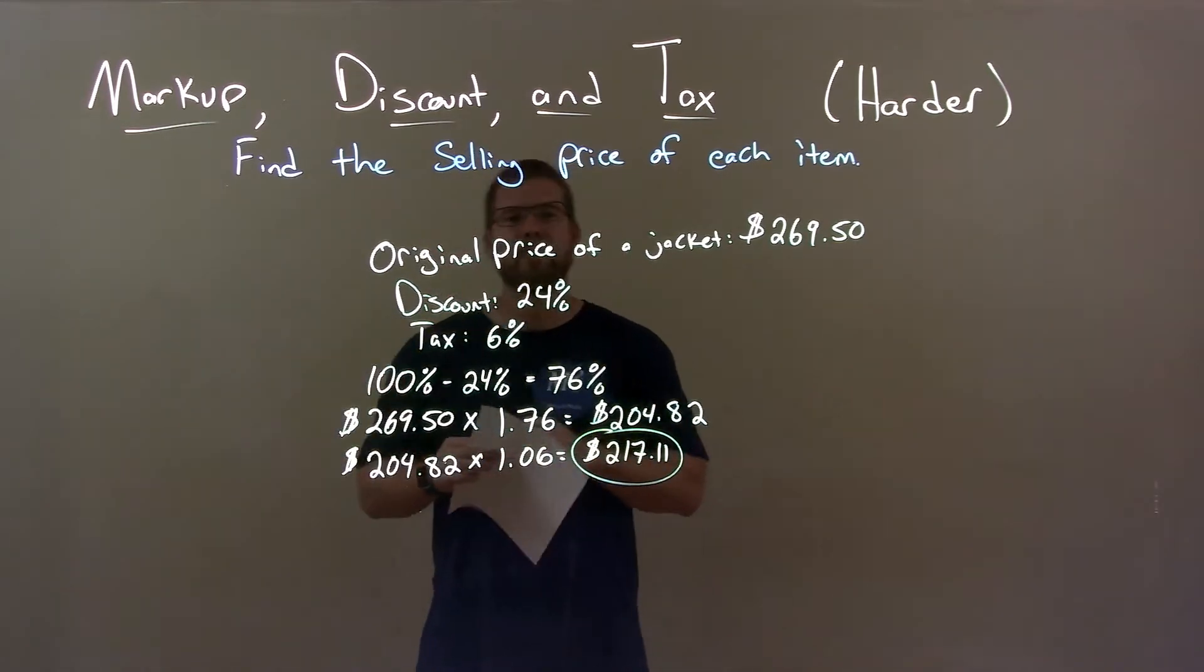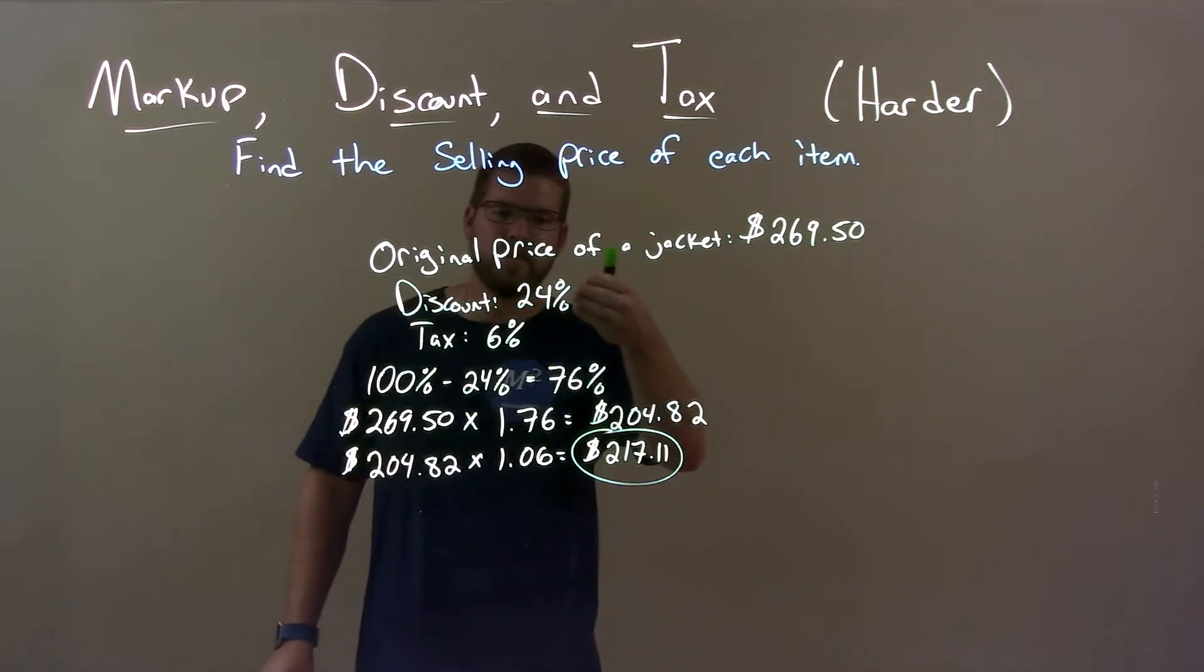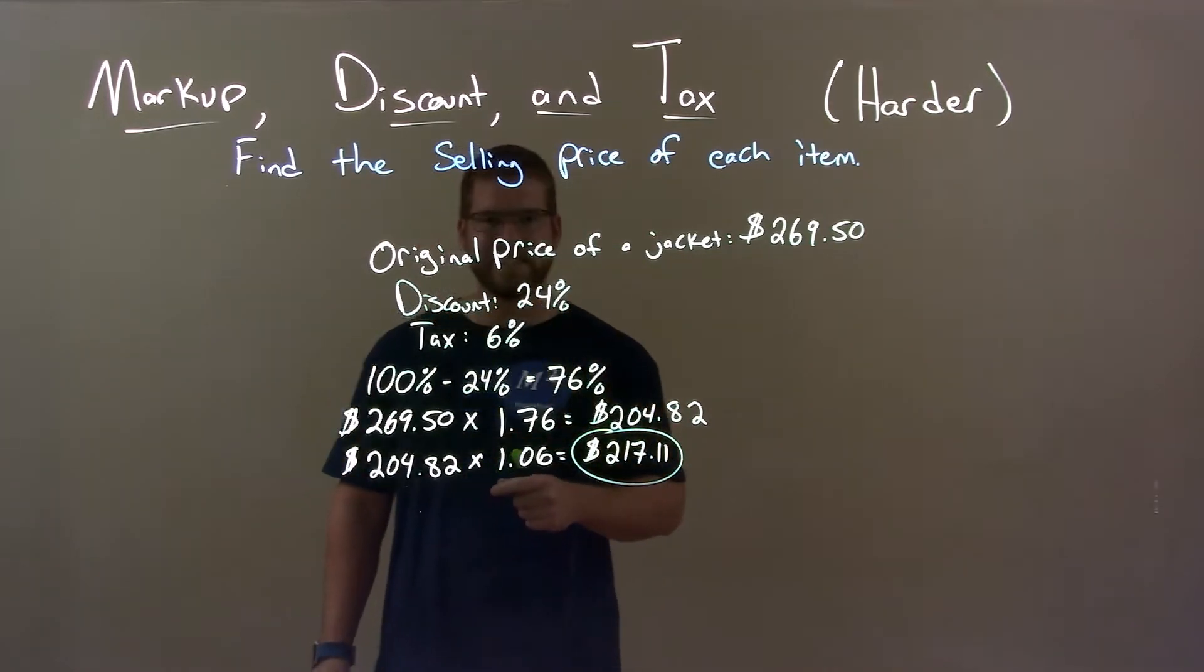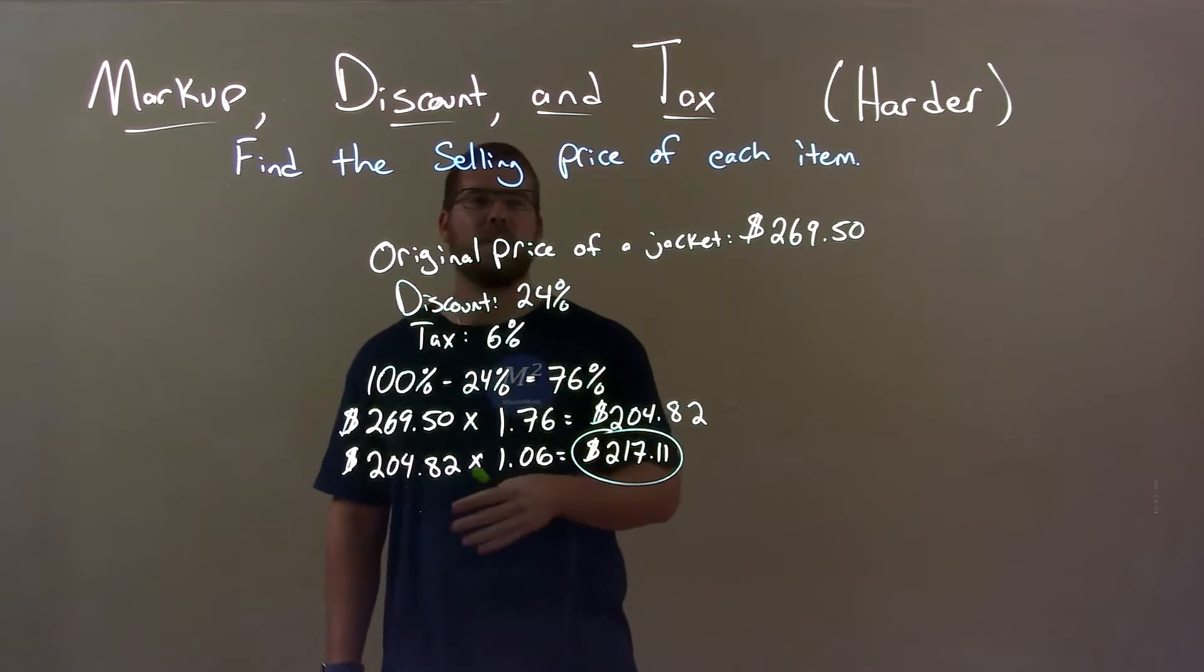Quick recap: we're given the original price of a jacket is $269.50, discount 24%, and tax 6%. And we have to find the final sale price.